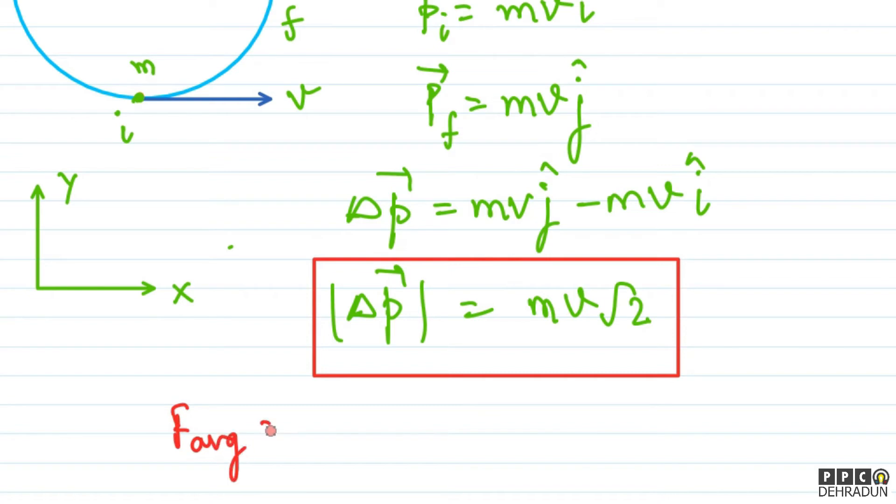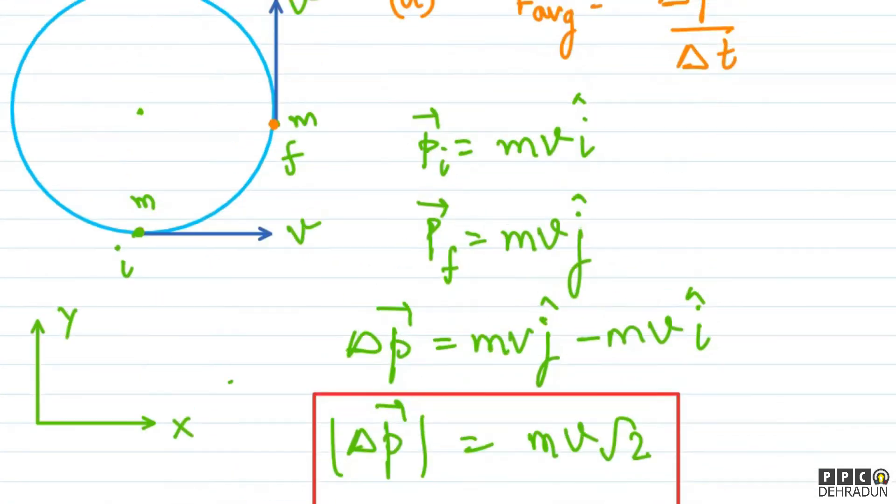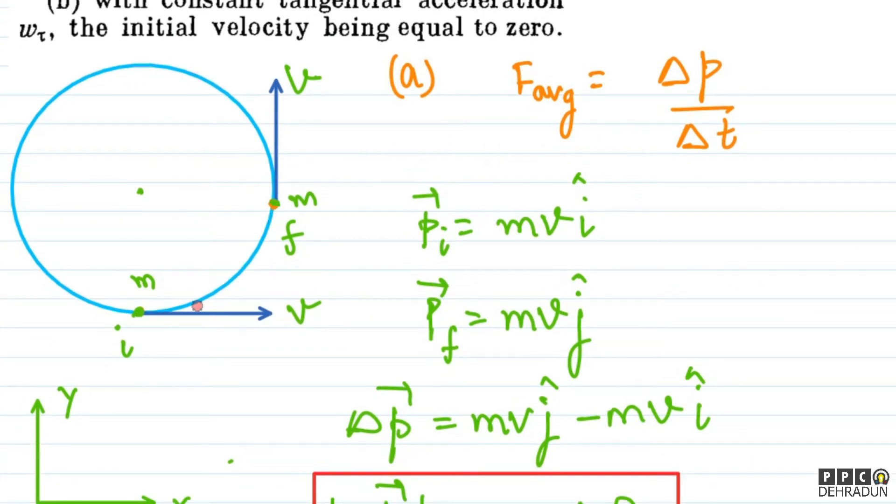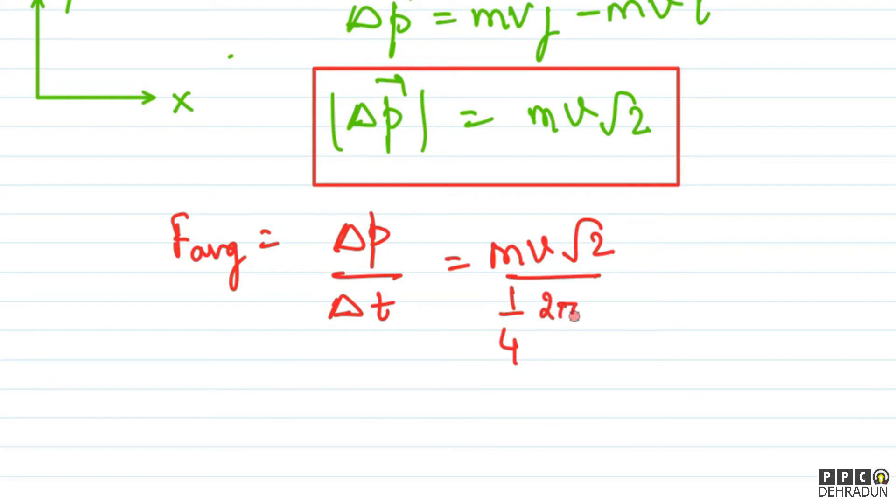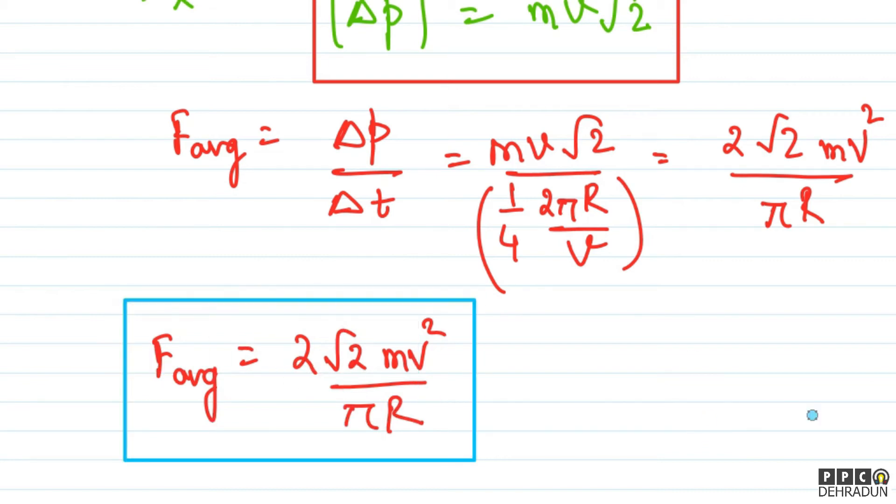F_average will be equal to change in momentum divided by time taken. So mv root 2 divided by time - how much will it be? The distance traveled is one-fourth of 2π r. So the time will be πR/2v. Therefore, the answer is 2 root 2 mv squared divided by π into R.